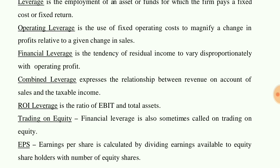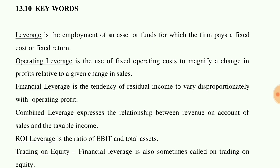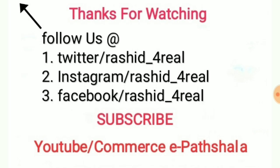EPS — Earning Per Share — is calculated by dividing earnings available to the equity shareholders by the number of equity shares. For example, if earnings available are 12,00,000 and total equity shares are 10,000, you divide to get the earning per share. That covers the keywords for Unit 13. I hope you like, share, and subscribe. Thank you, take care, and bye bye, have a nice day.